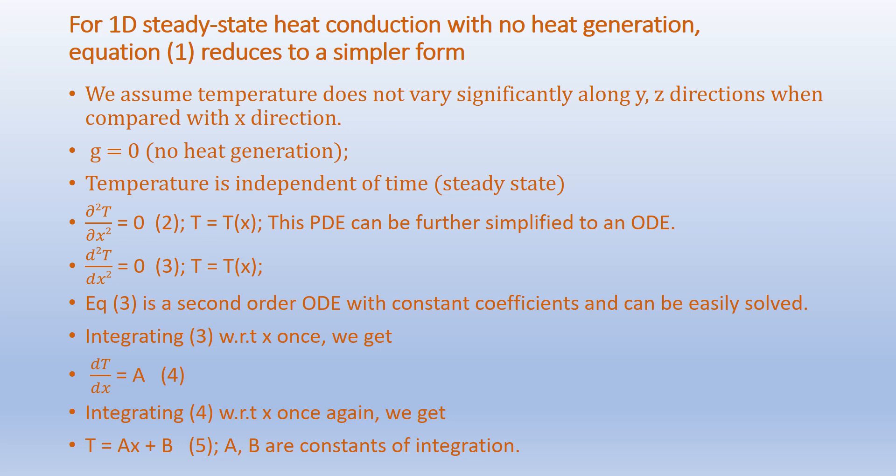T is a function of x. This PDE is in fact an ODE and is represented as d²T/dx² = 0, where T is a function of x. This is a second-order ODE with constant coefficients and can be easily solved. Integrating once with respect to x, we get dT/dx = A. Integrating again with respect to x, we get T = Ax + B.